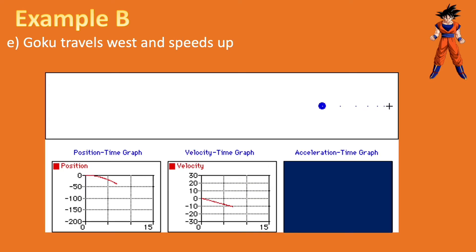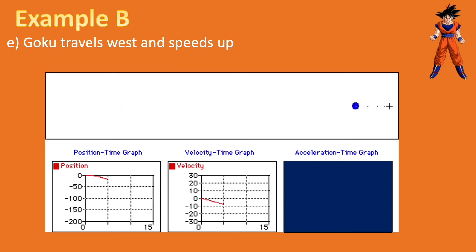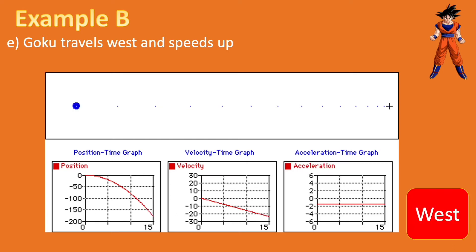Last one — travels west and speeds up. If you're going west and speeding up, the acceleration is in the same direction you're traveling. So in this case, he's going west and the acceleration is west.